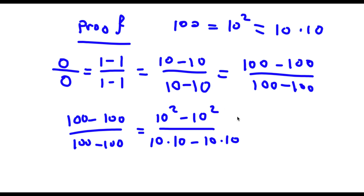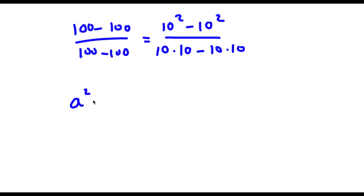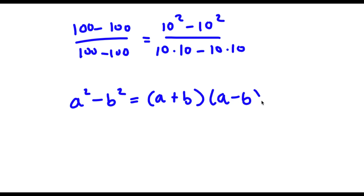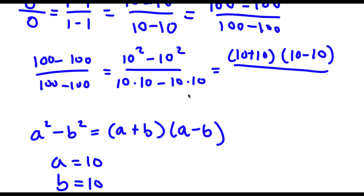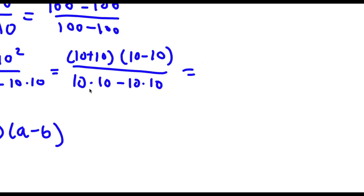Now, if I have something in the form a squared minus b squared, this is equal to (a + b)(a − b). So in this case a is 10 and b is 10 as well, so this is going to equal (10 + 10)(10 − 10). Now I have this over 10 times 10 minus 10 times 10, and from here I can factor out 10 from the denominator. Factoring out 10 from 10×10 minus 10×10 gives me 10 times (10 minus 10).